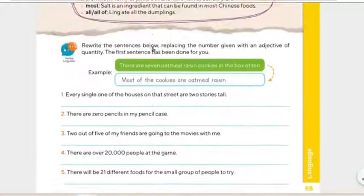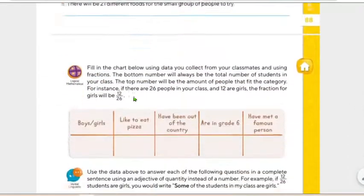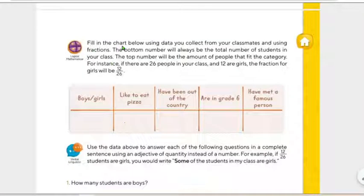Fill in the chart below. Remember that yesterday we worked with any, no, some, lots of, plenty of, most and all. So yesterday we worked on this. So now you are going to use these to complete this page. But first, fill in the chart below using data you collect from your classmates and using fractions. The bottom number will always be the total number of students in your class. The top number will be the amount of people that fit the category. For instance, if there are 26 people in your class, imagine 26 are all of the students that are in your class, right? And 12 are girls. The fraction will be 12/26, right? Why?